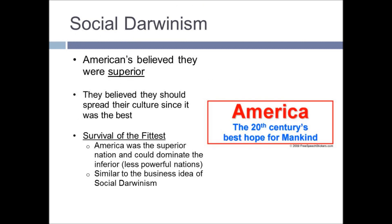Following this is the concept of Social Darwinism. We learned about Darwinism when we talked about business ideas — now apply that survival-of-the-fittest idea to spreading American culture. Americans believed they were superior and should spread their culture since it was the best. America was seen as the superior nation that could dominate less powerful or inferior nations. Looking at the picture on the right, it captures how America really felt they were the best hope for mankind at the beginning of the 20th century.